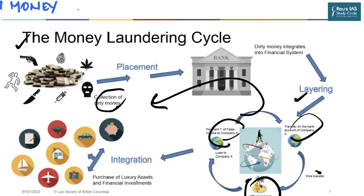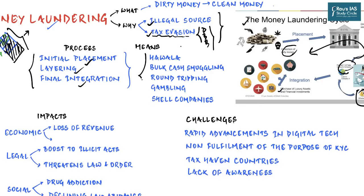Finally, integration: the money re-enters the system and now appears to come from legitimate sources. This is most often followed by purchasing luxury assets, property, creating trusts, and receiving donations through them in the future.